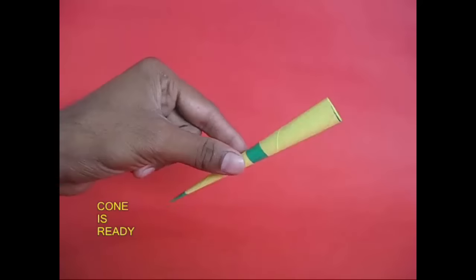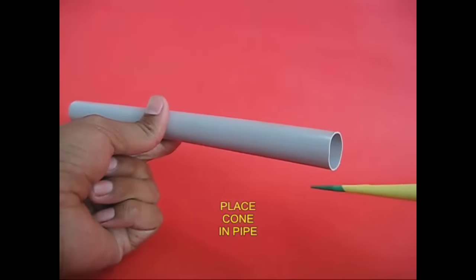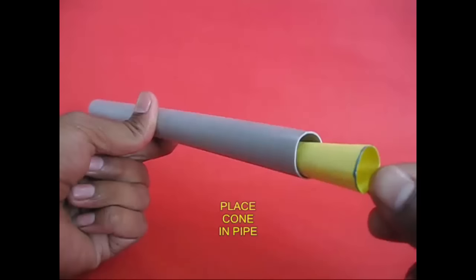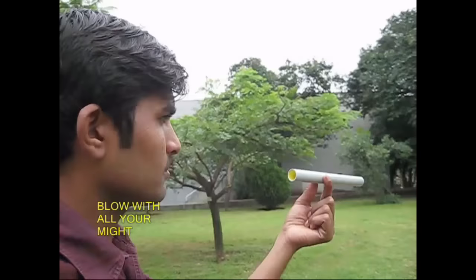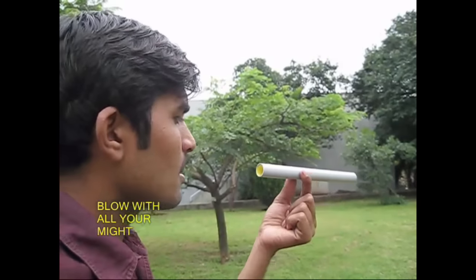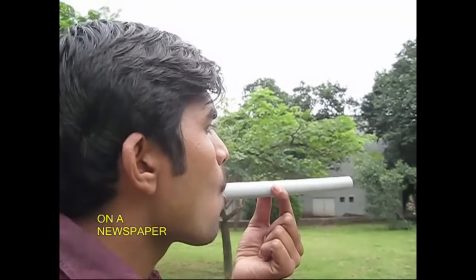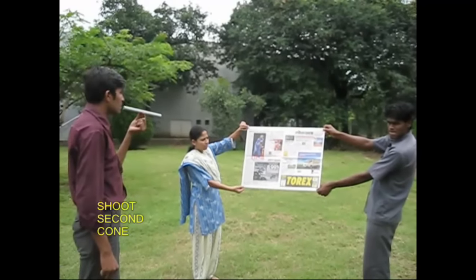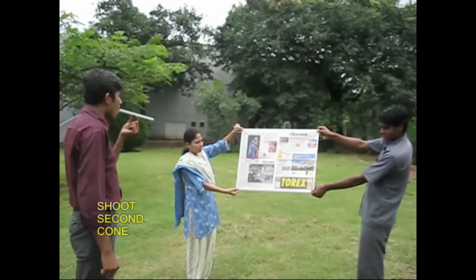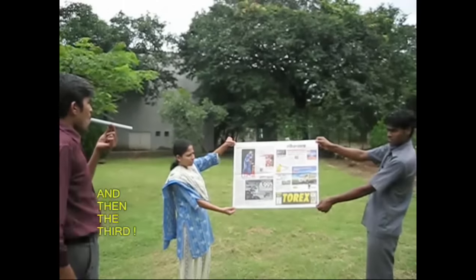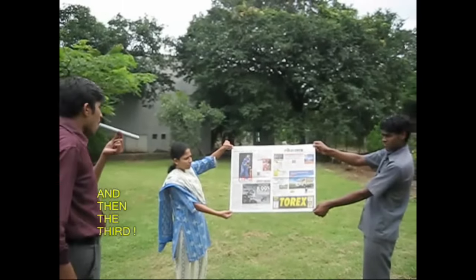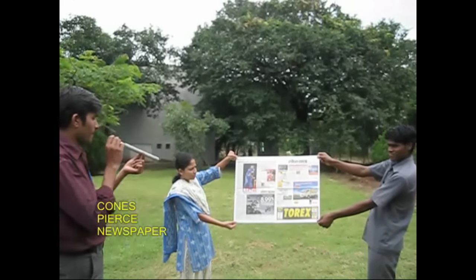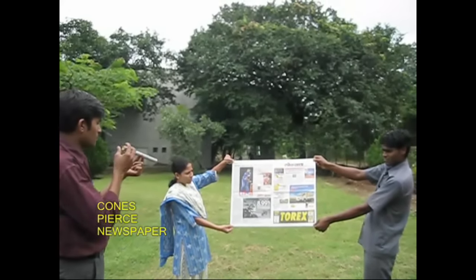Now, the diameter of the cone and the pipe is the same. The diameter of the cone is the same as the pipe, about three of the cone.